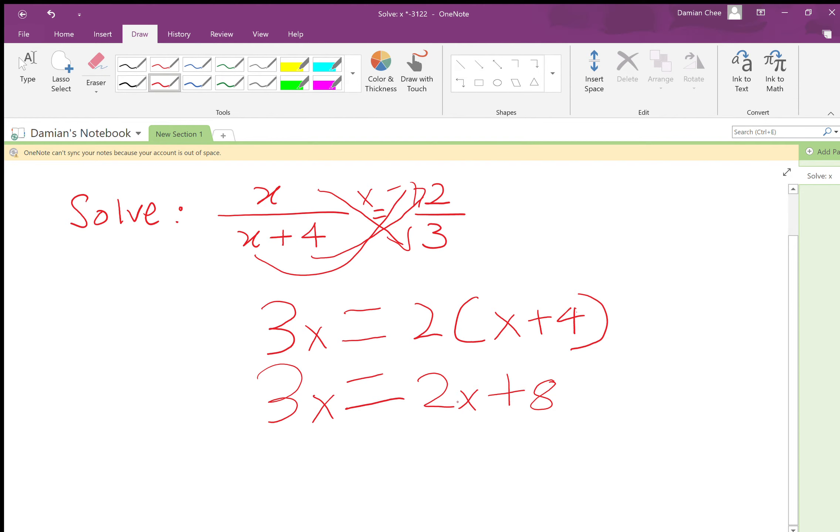So here, since there's 2x, and 3x is greater than 2x, let's do 3x minus 2x equals 2x minus 2x plus 8.